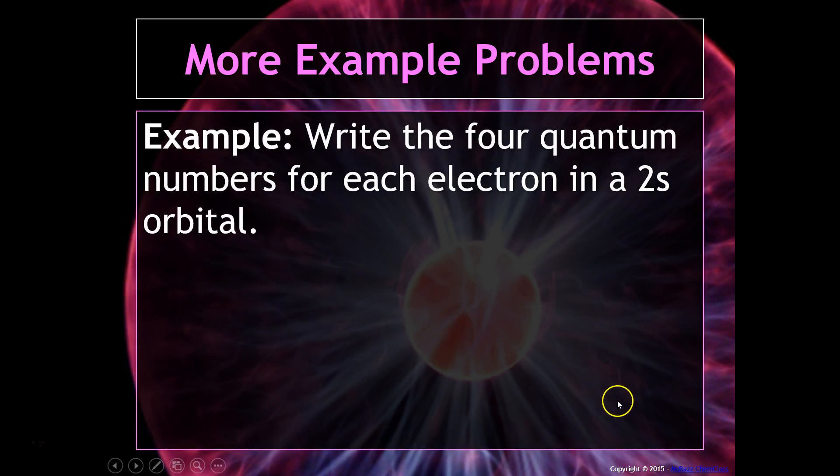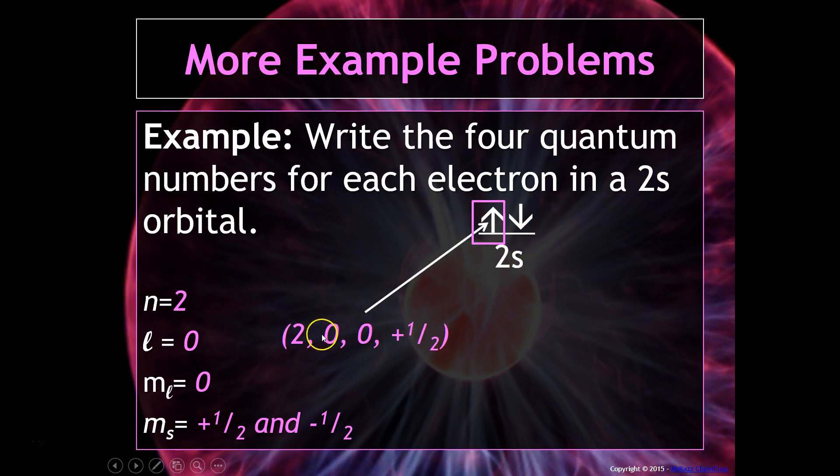Write the four quantum numbers for each electron in a 2S orbital. So as I mentioned, you can see that if we're looking at a 2S, N has to be 2. S is always associated with 0 for the L quantum number. The M sub L has to then be 0 because there's only one orientation. And then the M sub S only has two choices. It could either be plus 1 half or minus 1 half. So for that electron, because it has the upspin, that would be the particular quantum numbers for that electron. And then this electron, this would be those particular quantum numbers. Notice the quantum numbers are the same for the first three, but they're different in terms of the spin.